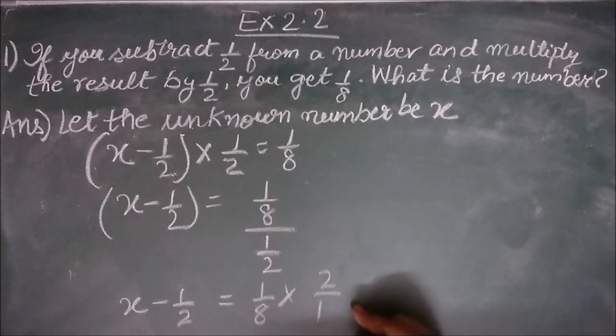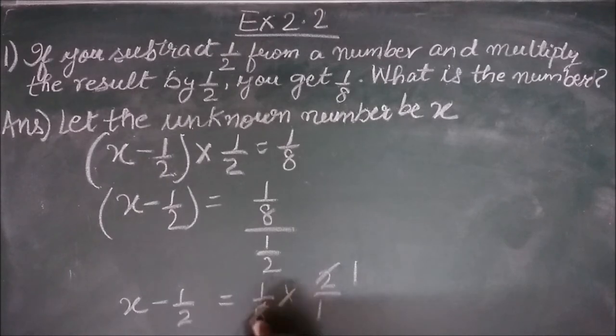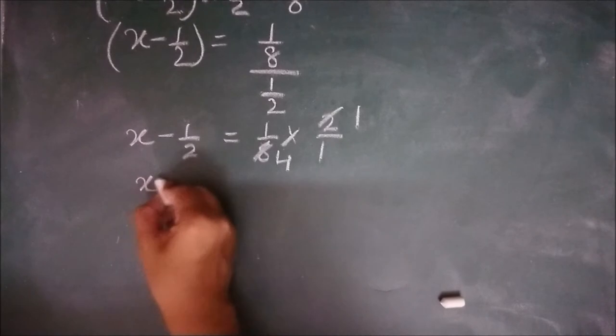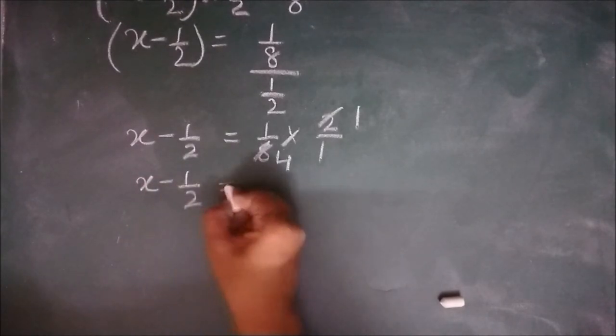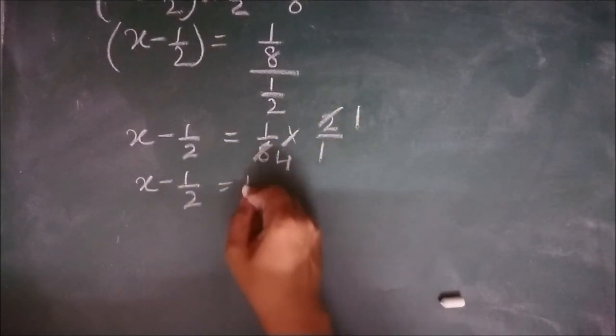Any cancellations possible? Yes. 2 1s are 2, 2 4s are 8. So x minus 1 by 2 is equal to 1 into 1 is 1 upon 4 into 1 is 4.